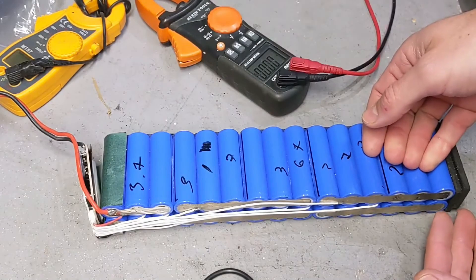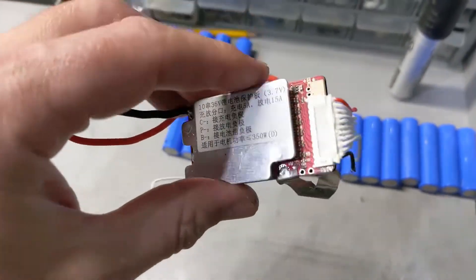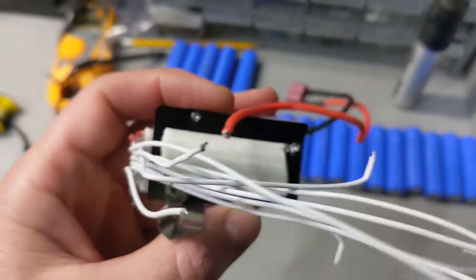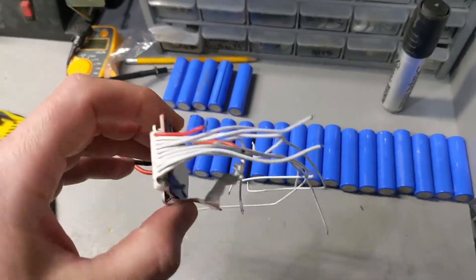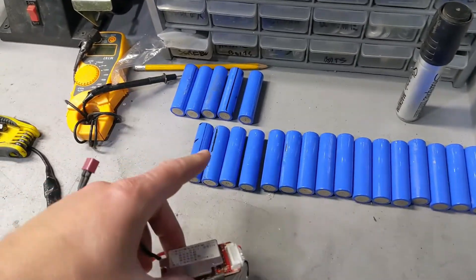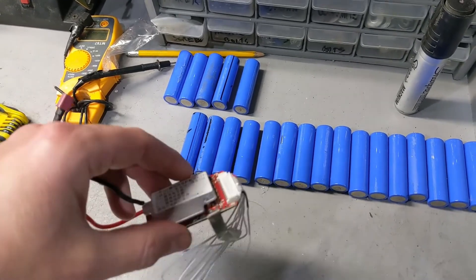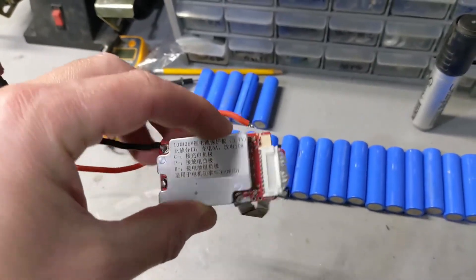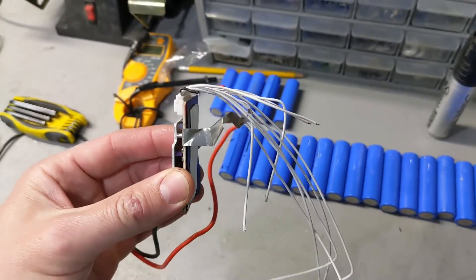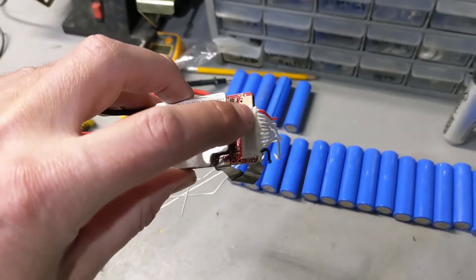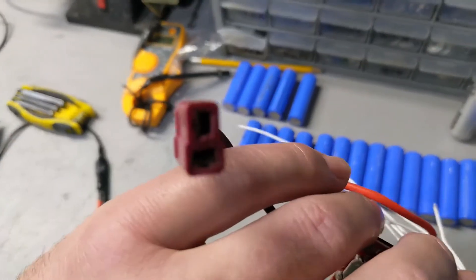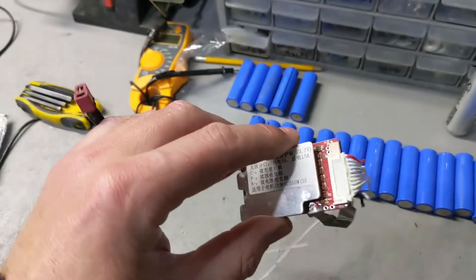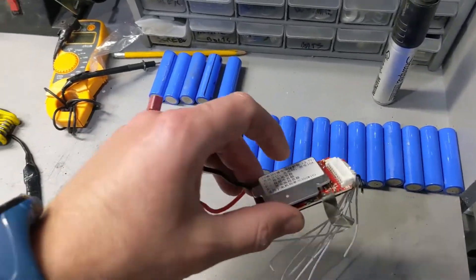Let me make it very clear so everybody can understand. The BMS job is to protect the cells, and the cells are in packs. If one of the cells or one of the packs drops under 2.9 volts, or whatever the BMS is scheduled to cut off, it doesn't cut off just that pack - it cuts off completely. So you're not going to get any power at all.